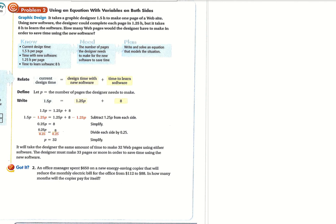All right, so then we have a word problem here. It takes a graphic designer 1.5 hours to make one page of a website. Using new software, the designer could complete each page in 1.25 hours, but it takes 8 hours to learn the software. How many web pages would the designer have to make in order to save time using the new software?